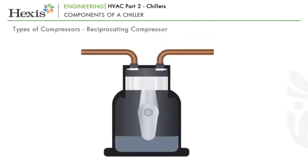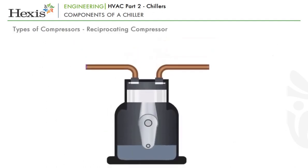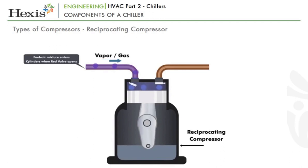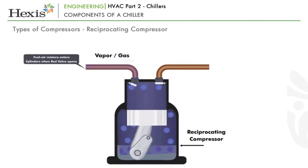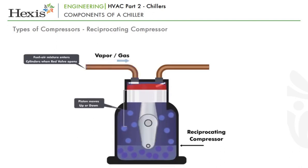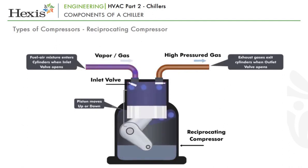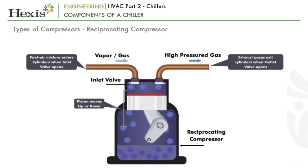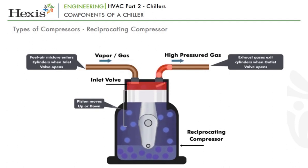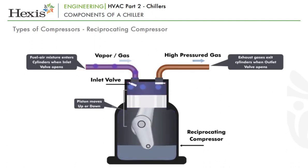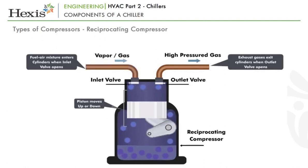The first type of compressor is the reciprocating compressor, which uses pistons moving back and forth to compress the gas much like an engine. It draws in the gas through an inlet valve while moving outwards, and then compresses it during the inward motion, releasing the high-pressure gas through an outlet valve.